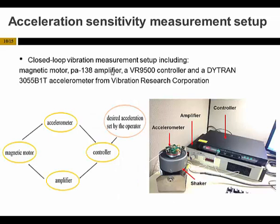To measure the acceleration sensitivity, we mount the oscillator board on a shaker — a magnetic motor — which is itself in a closed-loop control system that enables us to maintain stable vibration frequency and magnitude. This system includes an accelerometer, a controller, an amplifier, and the shaker.